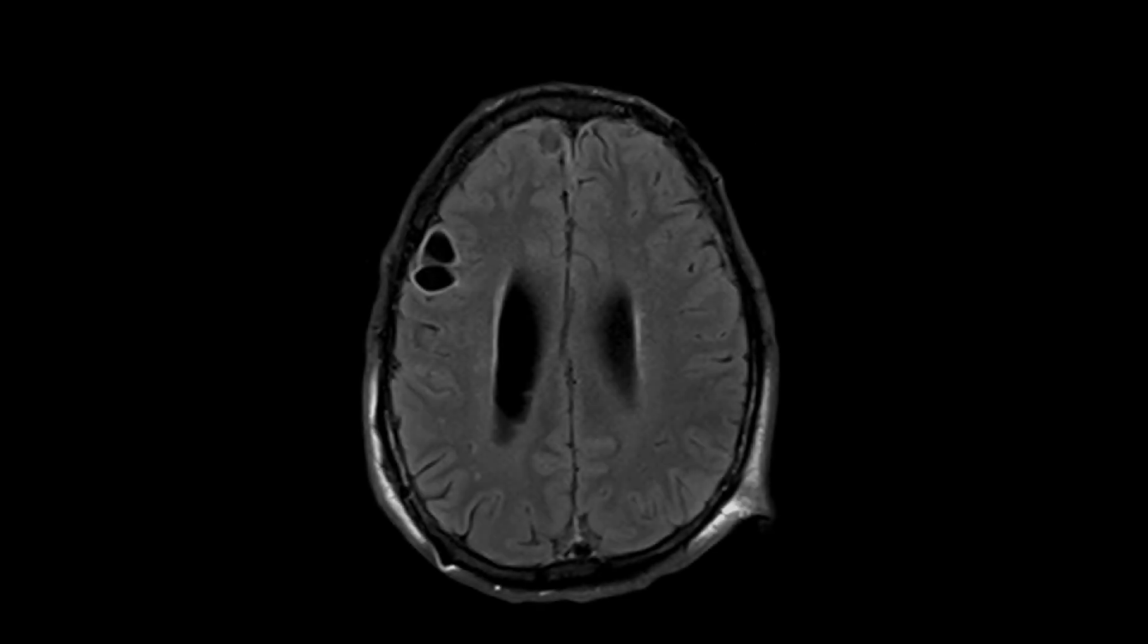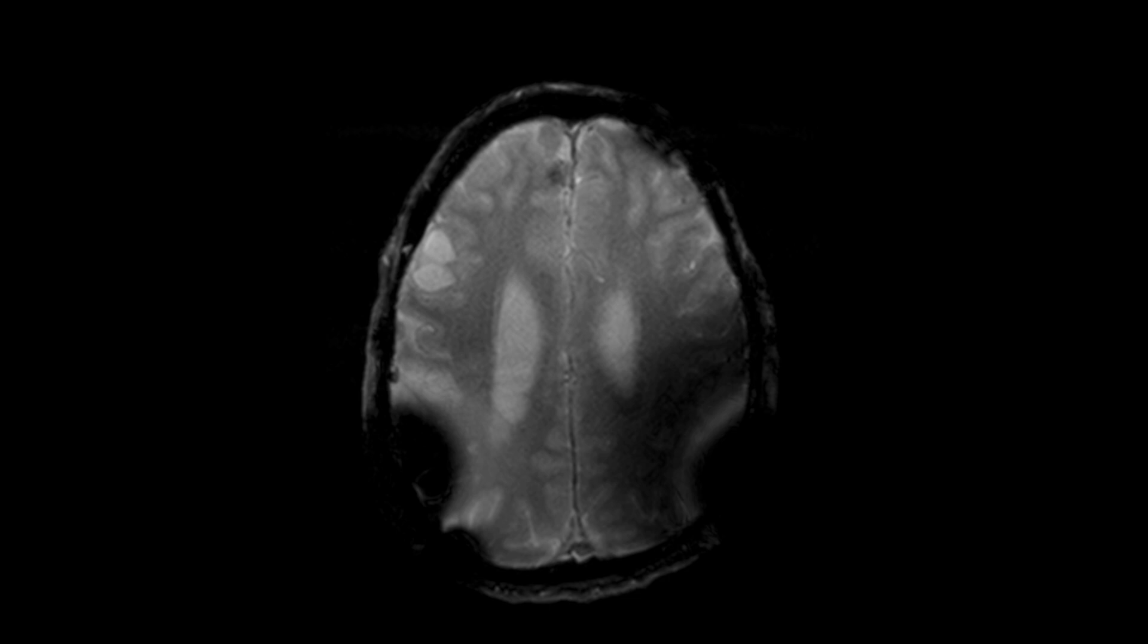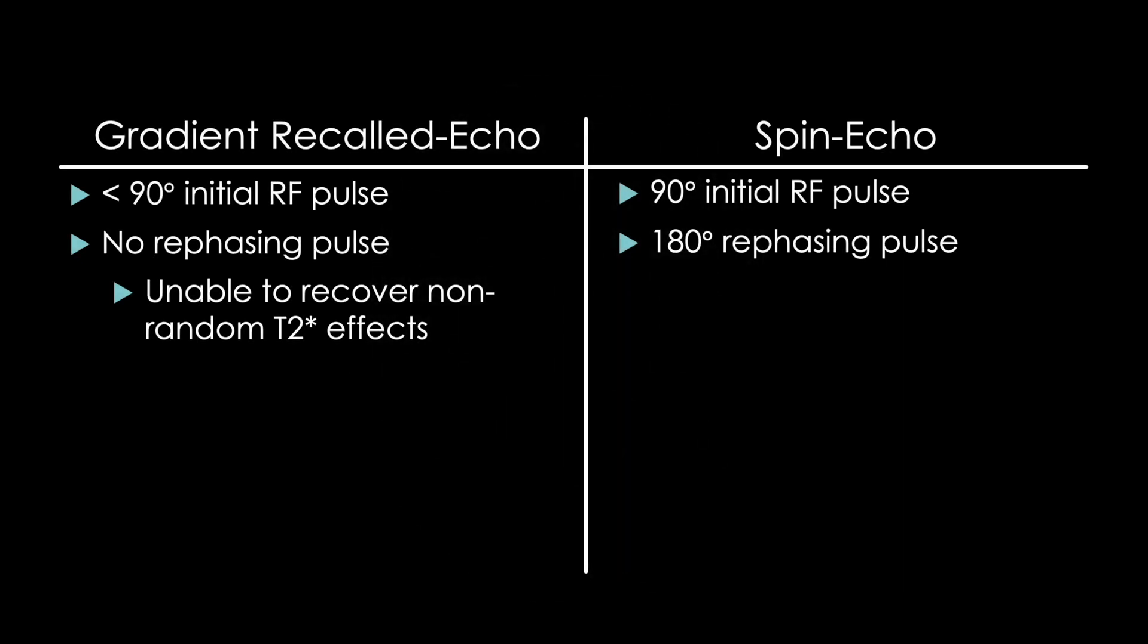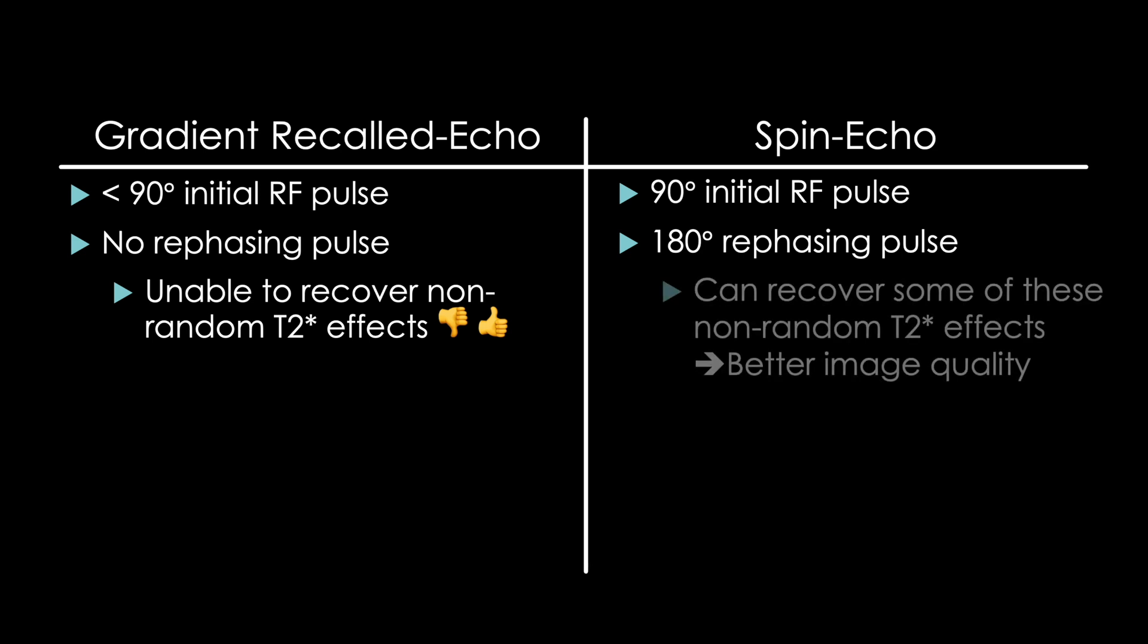So the consequence of having no rephasing pulse on our GRE sequence is that we're unable to recover these non-random T2 star effects. Meaning, instead of getting pretty pictures like this, our pictures have poor contrast to detect most pathologies and are severely degraded in the presence of any paramagnetic materials, poor magnetic field uniformity, or chemical shift, which is a problem in most cases. Unless this is exactly what we're looking for, mainly hemorrhage shown here within the right thalamus. This is the classic use of a GRE or SWI sequence, taking advantage of the fact that micro hemorrhages, which are paramagnetic and invisible on other sequences and imaging modalities, on a GRE sequence will disrupt the magnetic field and lead to signal dephasing or dropout. Pretty ingenious, right? So this inability to recover non-random T2 star effects on the GRE sequence is both a negative and a positive, depending on the information you're trying to get out of the image. The spin echo sequence has that rephasing pulse so we can recover some of these non-random T2 star effects, which we generally desire more as it gives us better image quality.